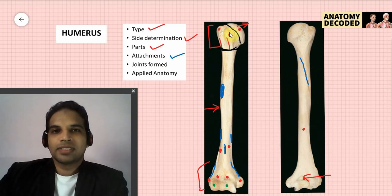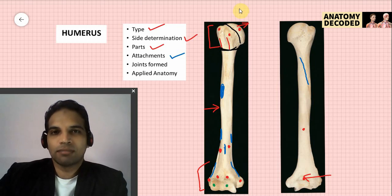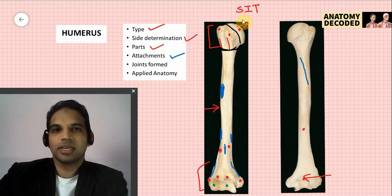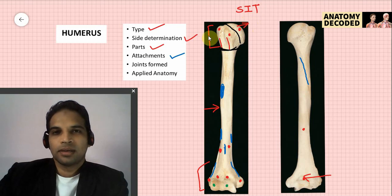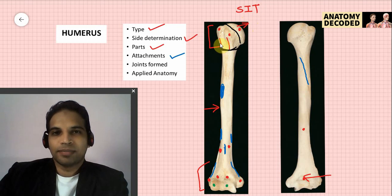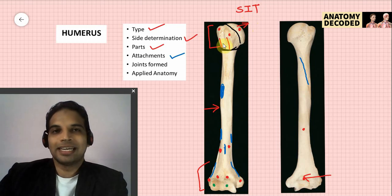Upper end attachments: the lesser tubercle gives attachment to subscapularis. The greater tubercle gives attachment to three muscles remembered by the mnemonic SIT — supraspinatus, infraspinatus, and teres minor. These three muscles together with subscapularis form the rotator cuff (musculotendinous cuff) of the shoulder. Along the intertubercular sulcus: the lateral lip gives attachment to pectoralis major, the medial lip to teres major, and the floor to latissimus dorsi.